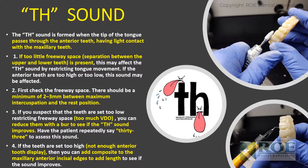If the teeth are set too high with not enough anterior tooth display, you can add composite to the length and have the patient say '33, 33, 33.' You may have to do this a few times with your composite until the patient can say that sound properly. By adding to that length, other adjustments may also be needed — whether it be moving lower anterior teeth or adjusting vertical dimension.